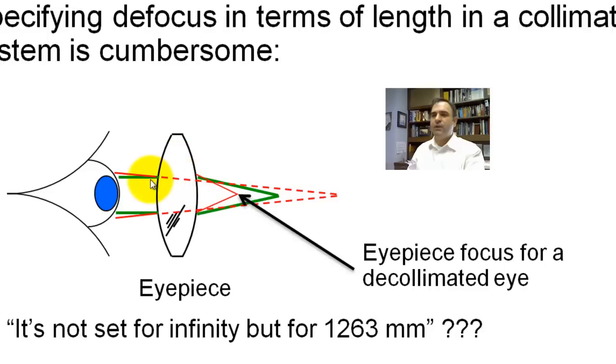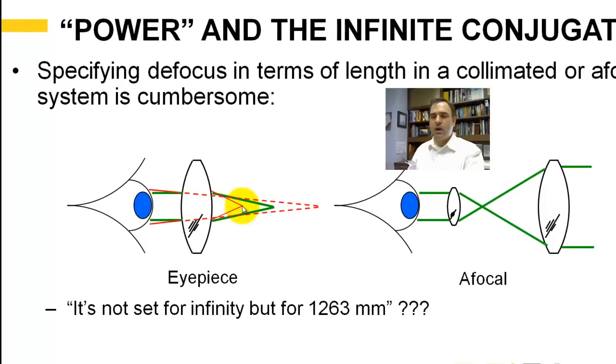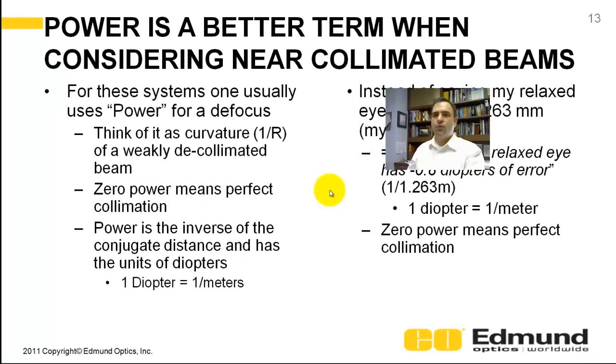But let's say we've got the red rays. So the red projected forward. You're really imaging here. But when it goes through the lens, it's got some defocus. It's really coming to a focus here. This also applies for an afocal system. So for these systems, one uses power to describe defocus.